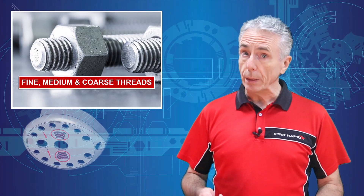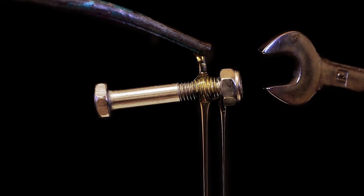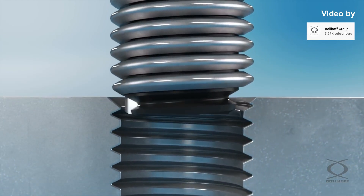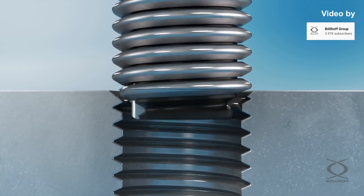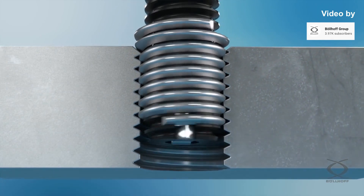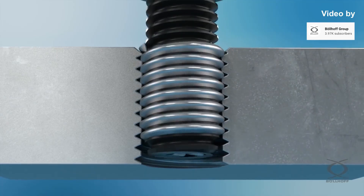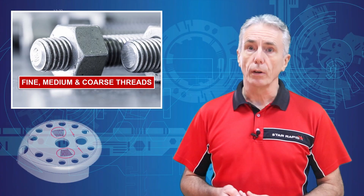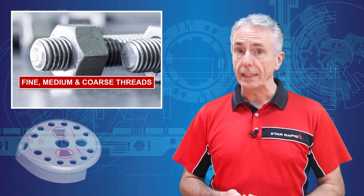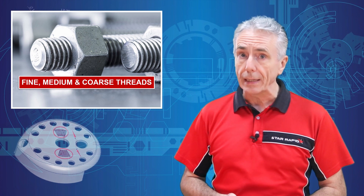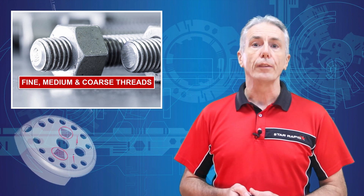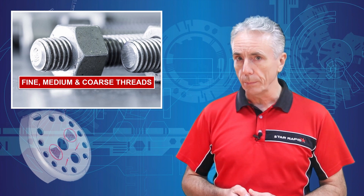Galling can be prevented with thread coatings such as an oxide, or by using a lubricant. Helicoils are also used for inserting a harder thread inside of a softer surrounding base material. Medium threads are the most common for general-purpose assemblies. And coarse threads are the easiest to make, have the most resistance to pull-out, and are often on very heavy industrial equipment.